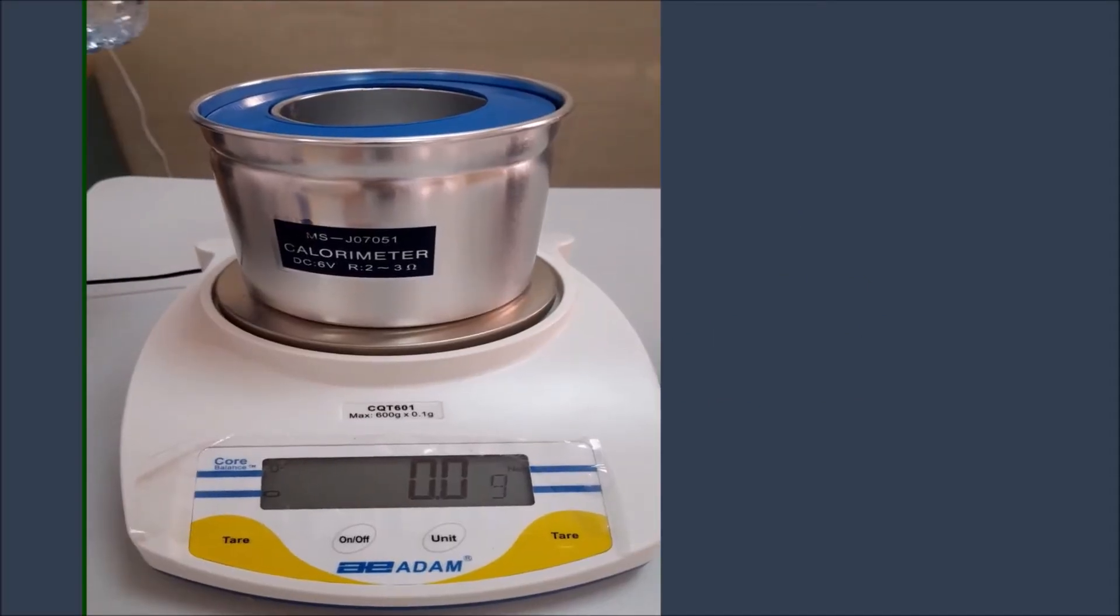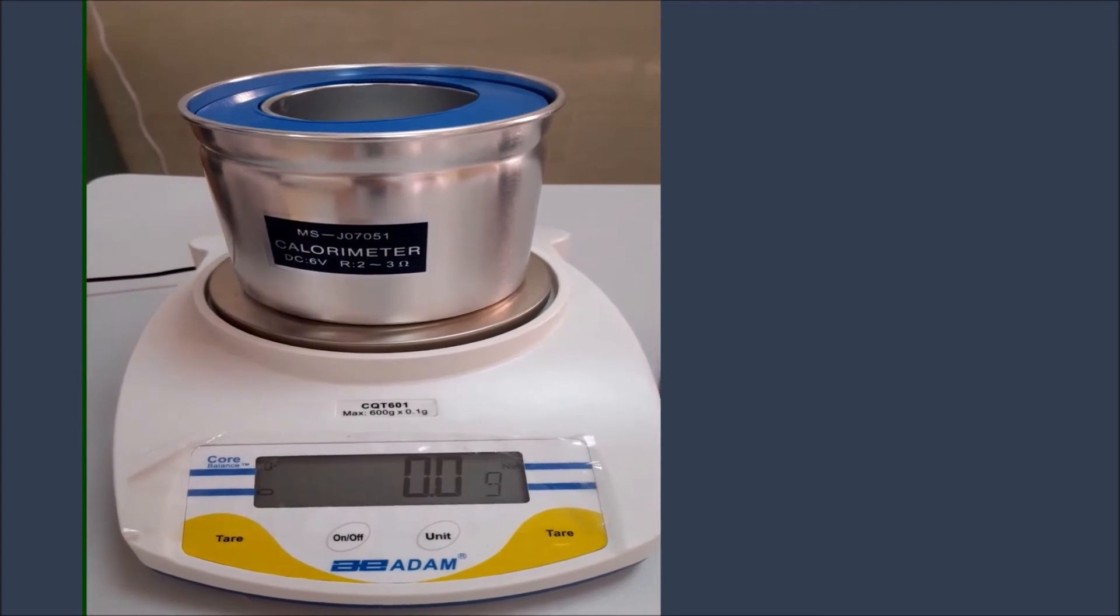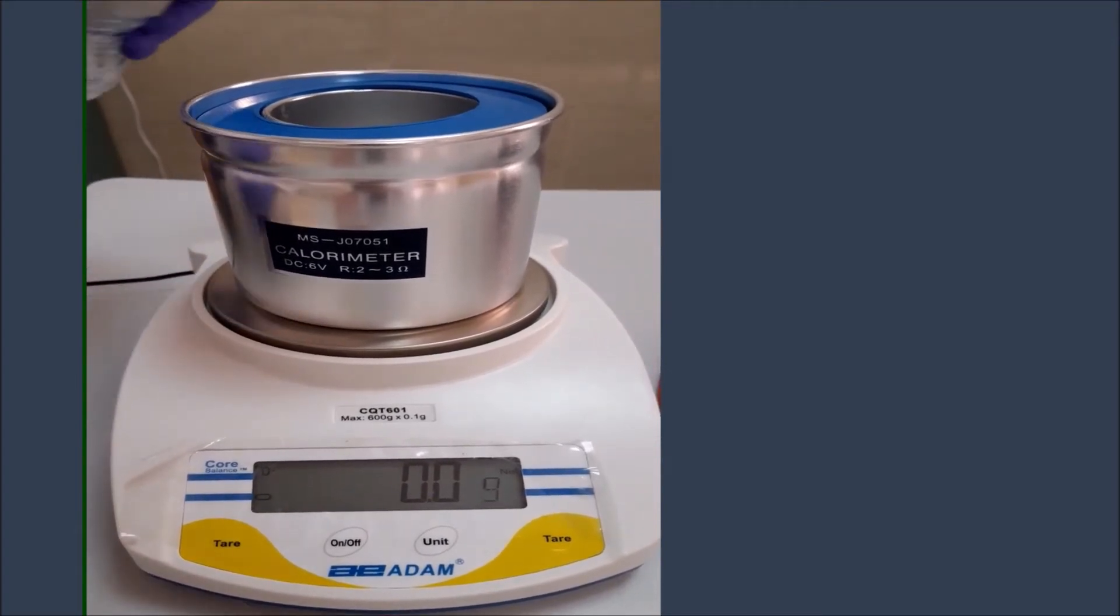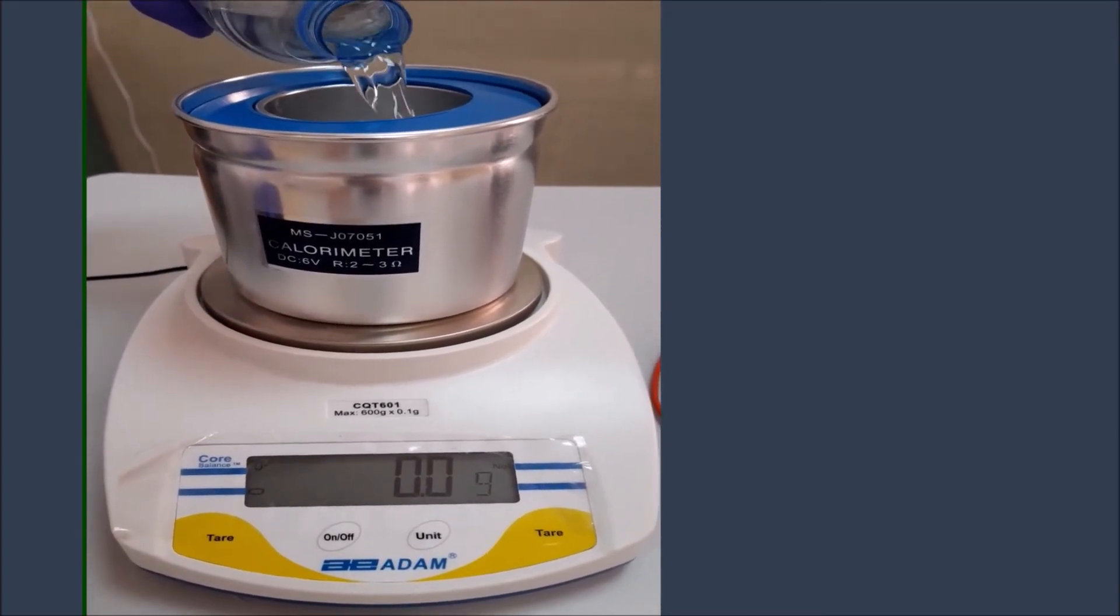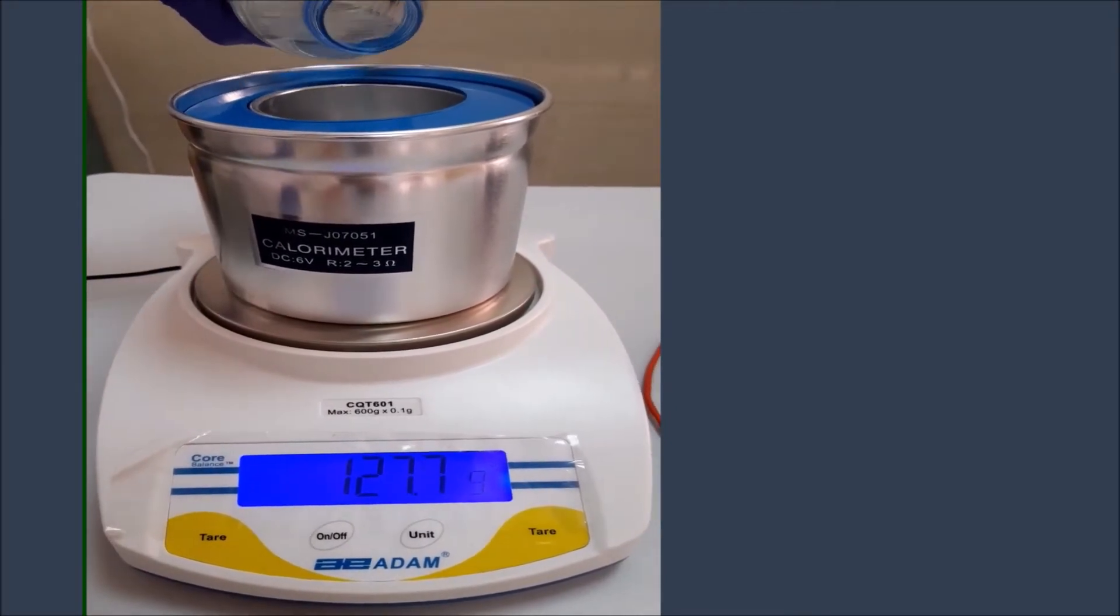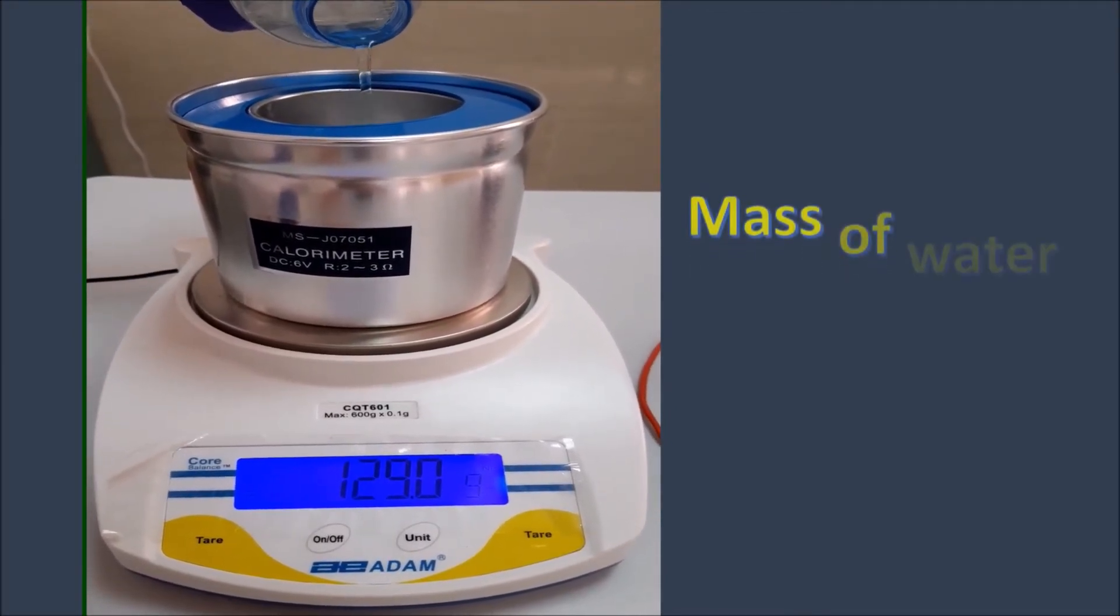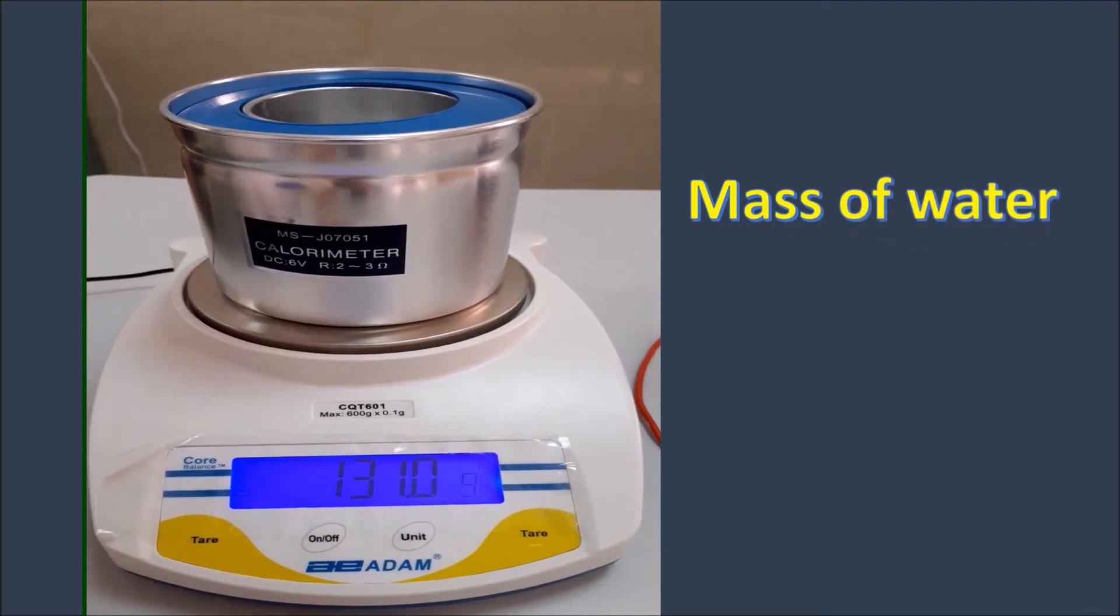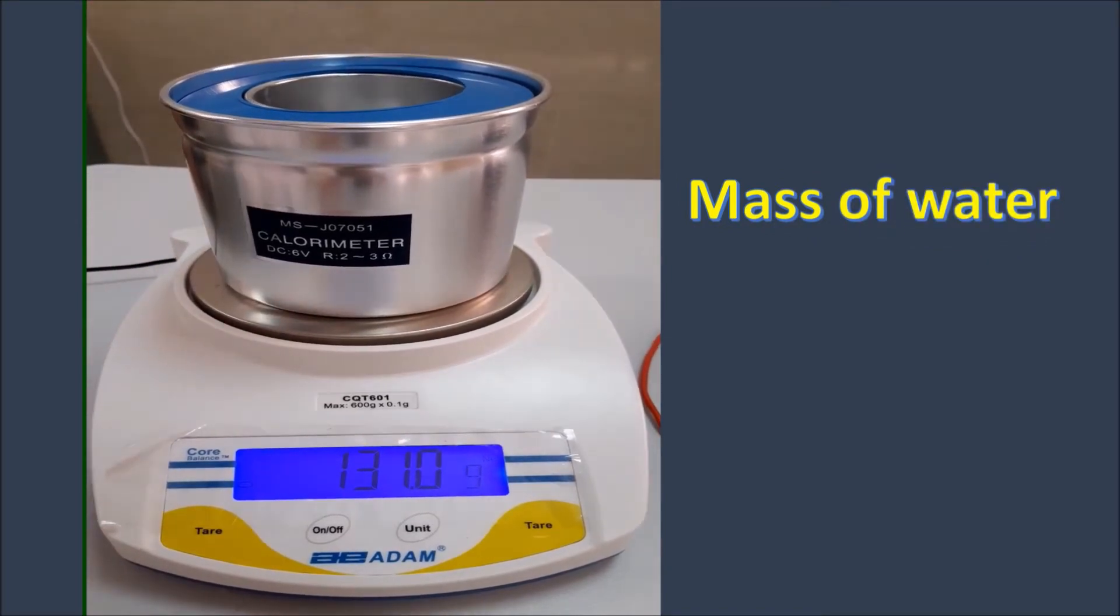So let's pour water in the calorimeter. We started at 0 gram and we will measure the mass of water. So the mass of water is 131 gram or let's convert it to kilogram which is 0.131 kilogram.